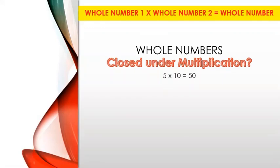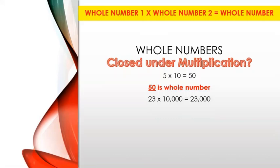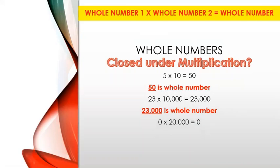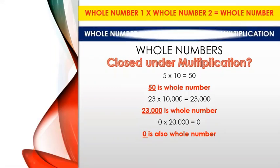5 times 10 is 50, which is a whole number. Now let us involve the whole number zero: zero times 20,000 is equal to zero. Whenever we multiply any number with zero, we get zero. So when we take any two whole numbers and multiply them, the answer is always a whole number. Whole numbers are closed under multiplication.